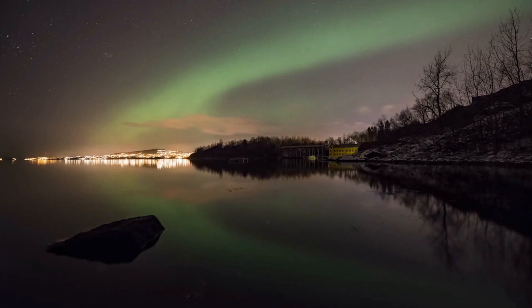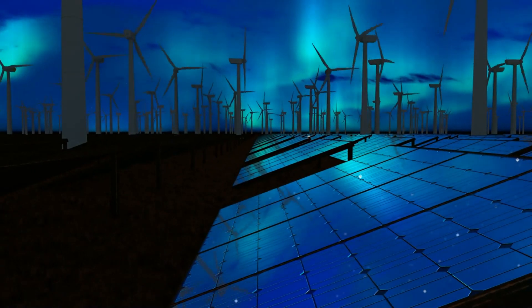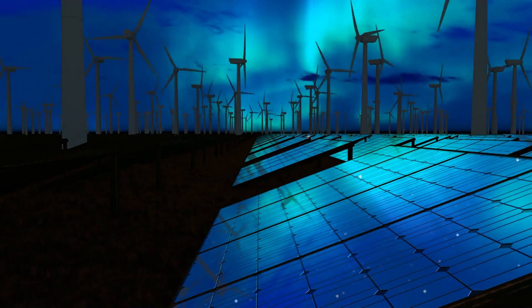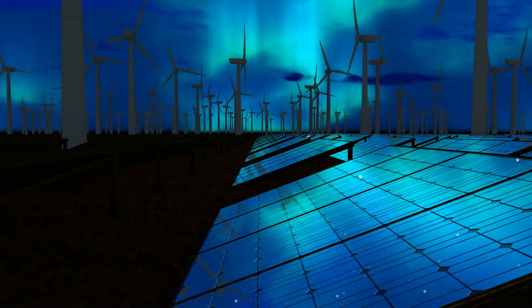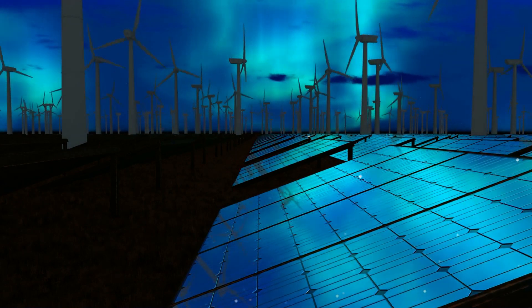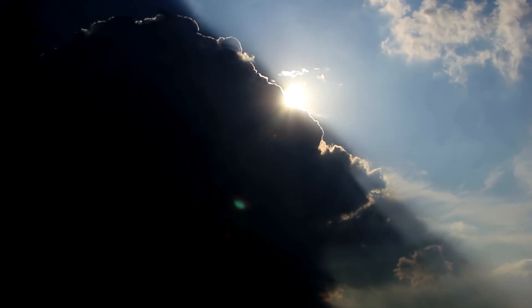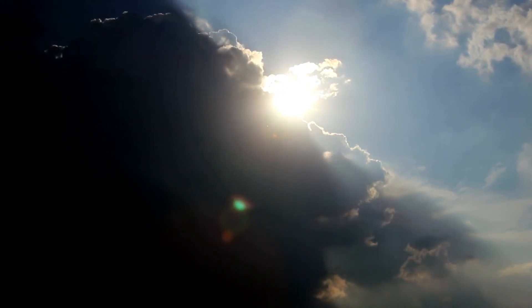Have you ever seen the northern or southern lights? These stunning displays, known as auroras, are a direct result of the Earth's magnetic field interacting with the solar wind. When charged particles from the Sun collide with atoms in the Earth's atmosphere, they create these beautiful light shows.